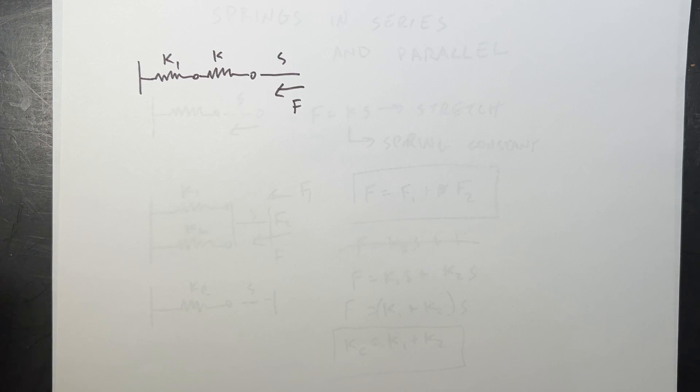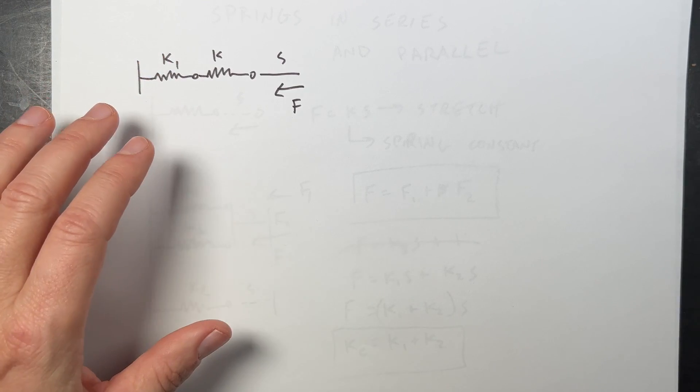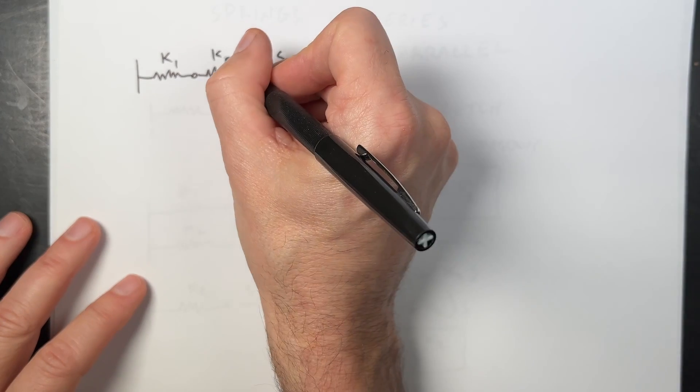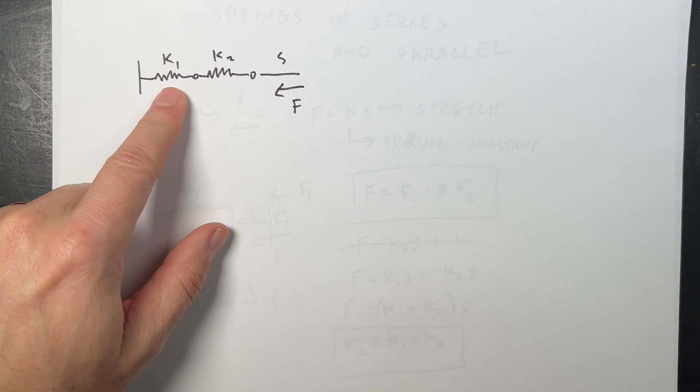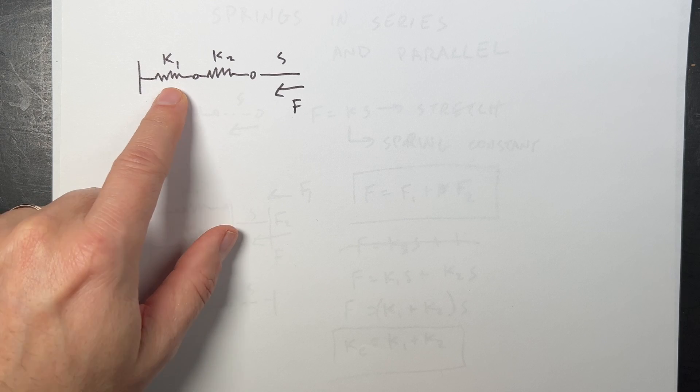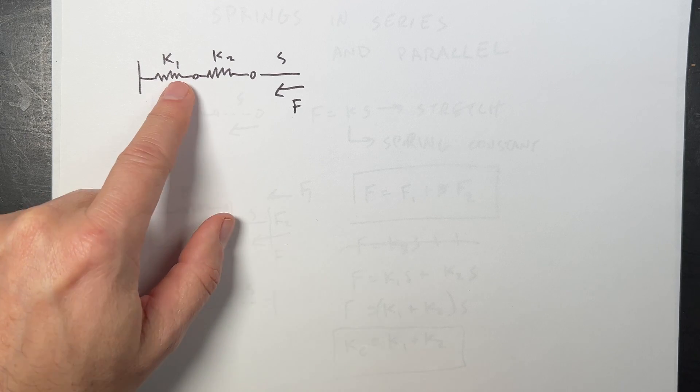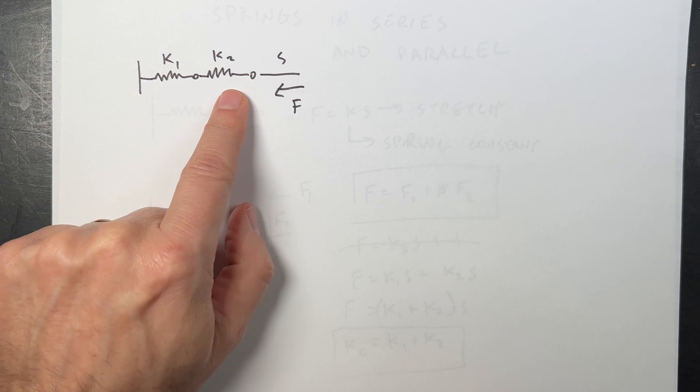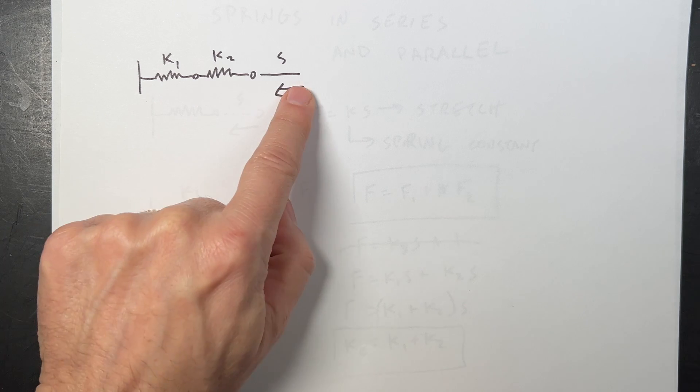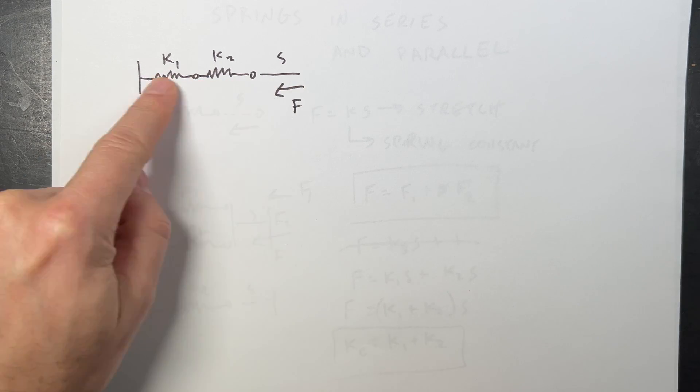Now in this case, if these springs have no mass, then the force that K1 pulls is the same as K2, right? Because what pulls spring 1? Spring 2. And what pulls spring 2? It's whatever force they have. So these forces have to be the same.